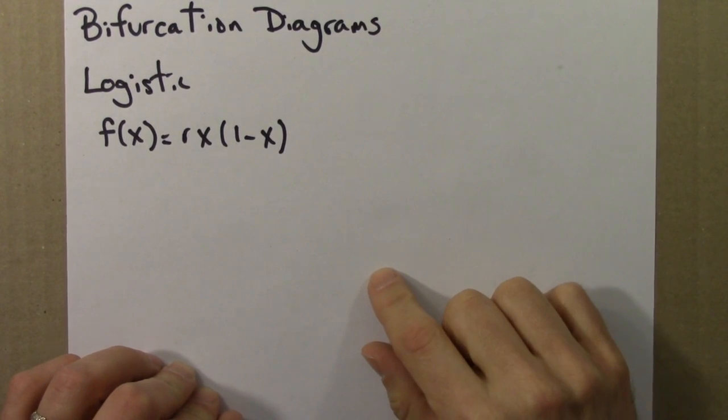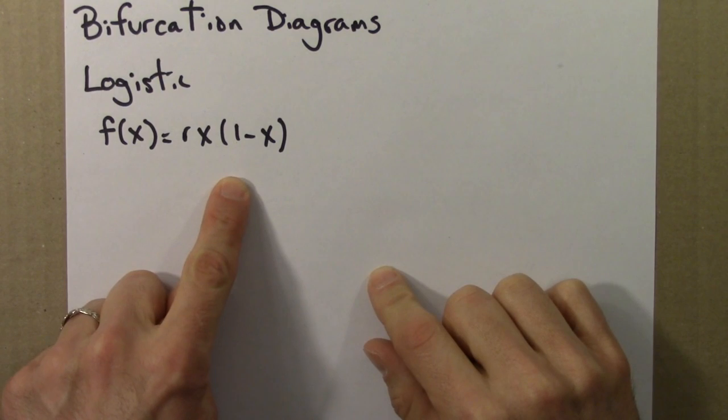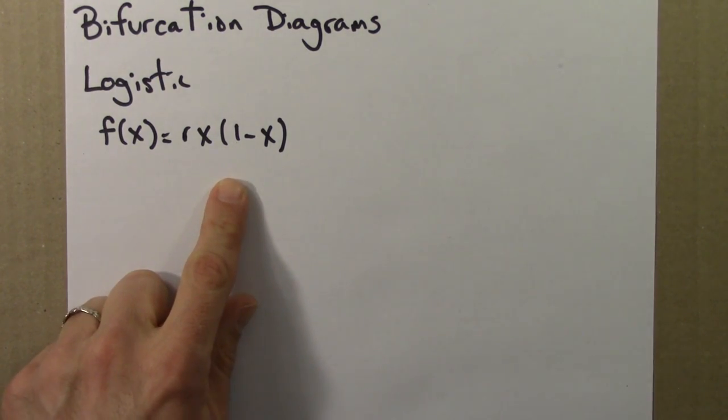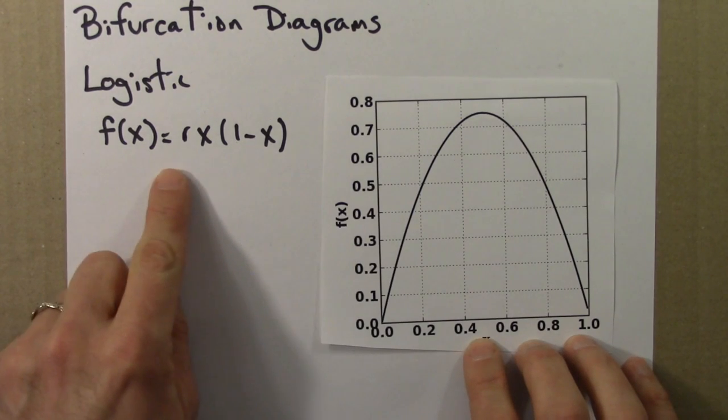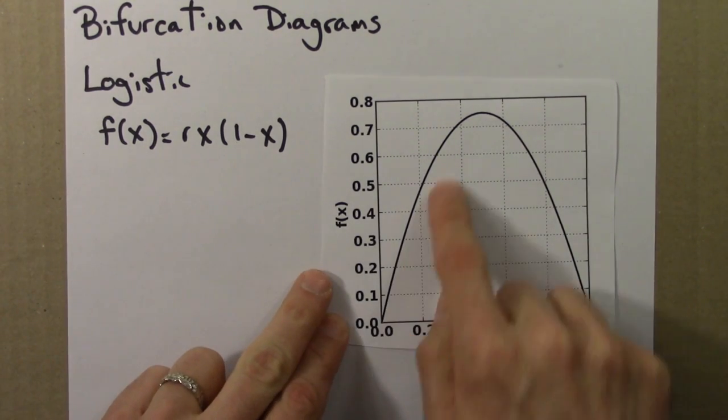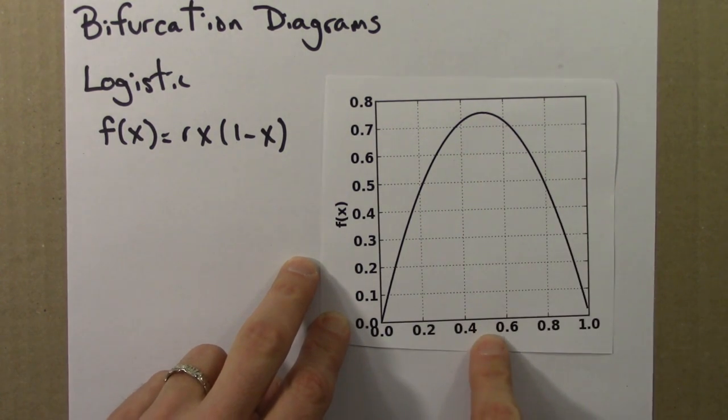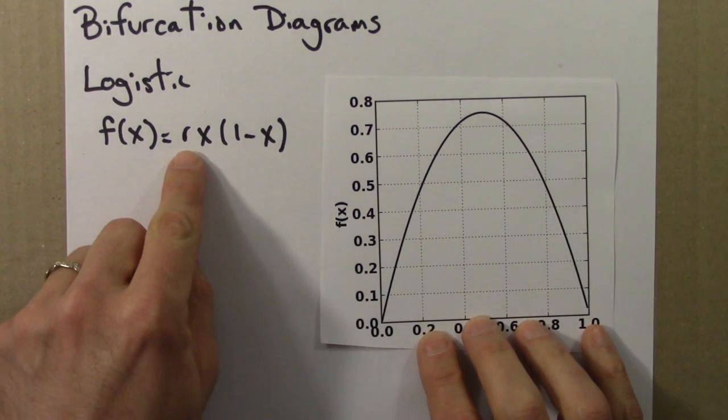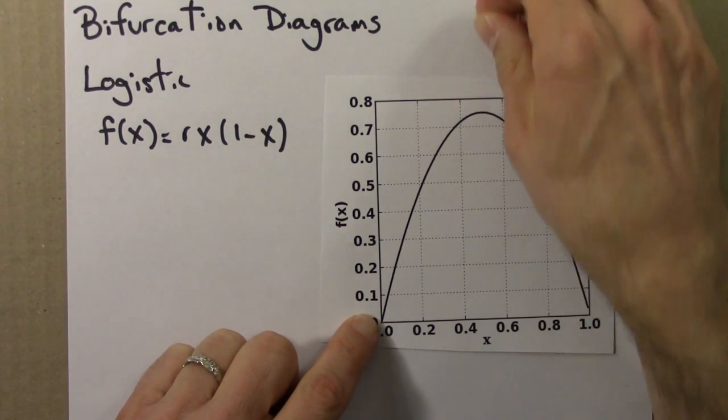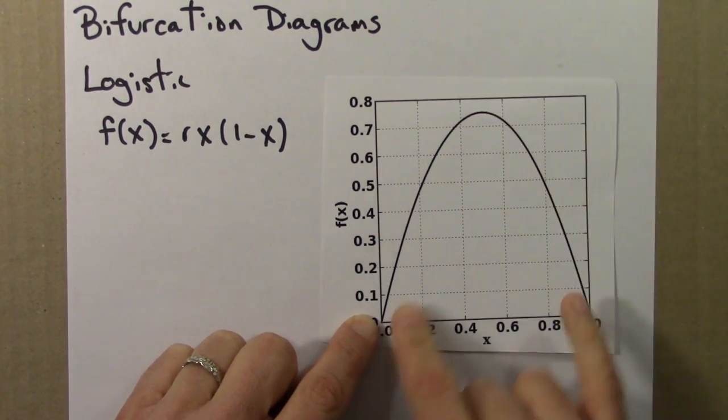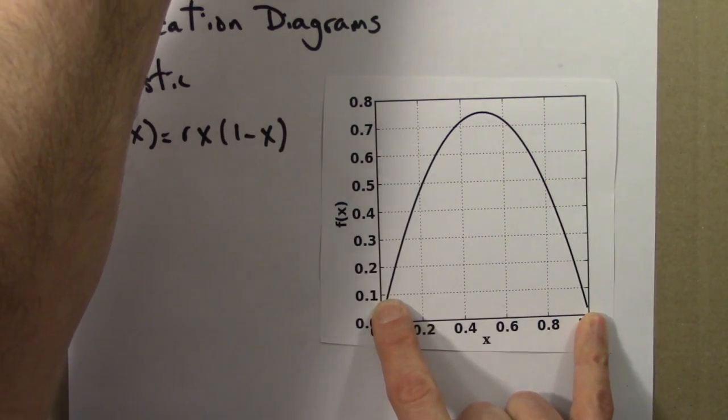So here's our old friend, the logistic equation: f(x) = rx(1-x). Here's a graph of the right-hand side of this function. As we've seen, it's just an upside-down parabola. It has its maximum at a half. And changing r, r as a parameter, has the effect of stretching this function up. So these would stay pinned, but this would get stretched up this way as I increase r.